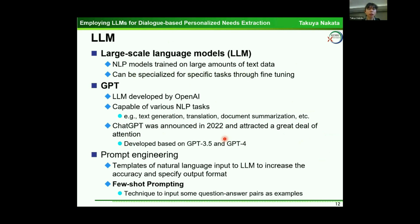Before talking about the approaches, I will explain LLM — large-scale language models. LLMs are NLP models trained on large amounts of text data, and they can be specialized for specific tasks through fine-tuning. GPT is an LLM developed by OpenAI, capable of various NLP tasks like text generation, translation, and document summarization. ChatGPT was announced in 2022 and attracted a great deal of attention; it was developed based on GPT-3.5 and GPT-4. Prompt engineering provides templates of natural language input to LLM to increase accuracy and specify output format. One technique is few-shot prompting, which inputs some question-answer pairs as examples.